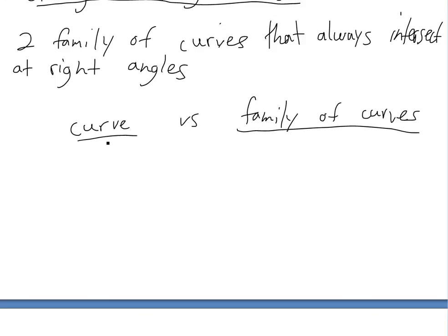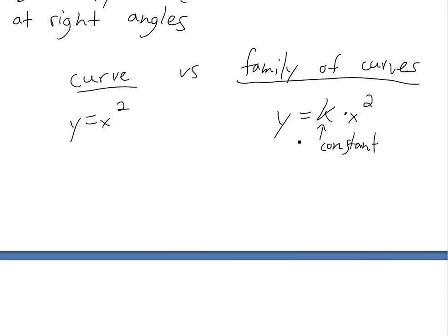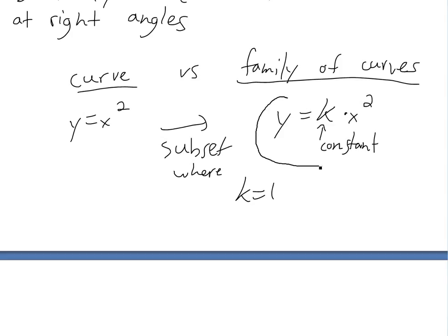What I mean by a family of curves: if you have a curve like y equals x squared, a family of curves could be y equals k times x squared, where k is a constant. As you change k, you get different curves. So the family of curves is all the curves that have this property — x squared times a constant.